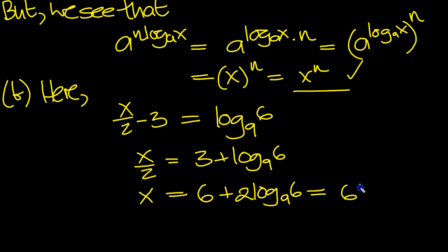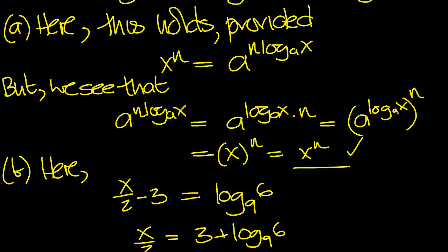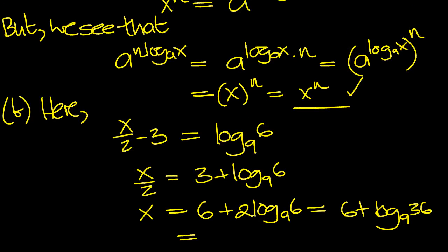Equals 6 plus log - 2 comes up to be a power - 9 of 36, and we can work that out. We need to work it out to 3 decimal places. So let's do that on the calculator then.